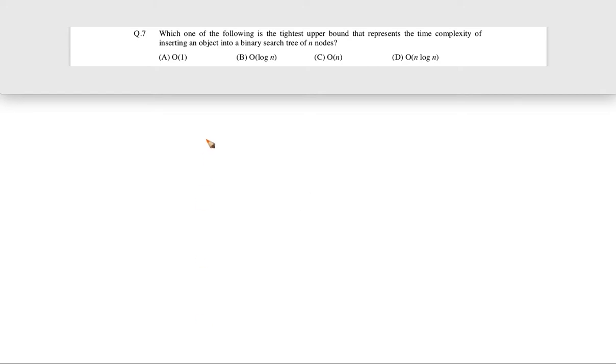Let's see this question. This question came in GATE 2013 for one mark. The question is: which one of the following is the tightest upper bound that represents the time complexity of inserting an object into a binary search tree of n nodes? So there is a binary search tree of n nodes, and